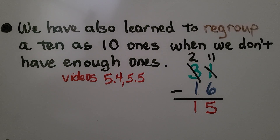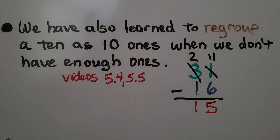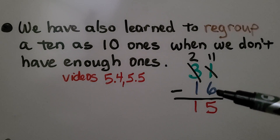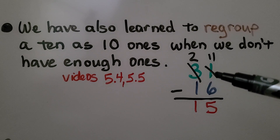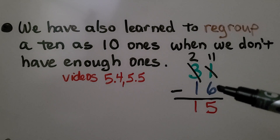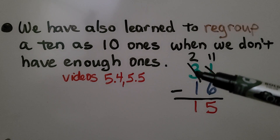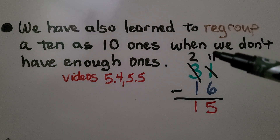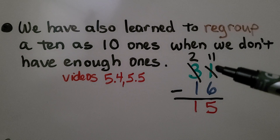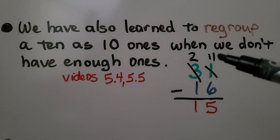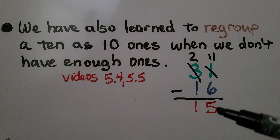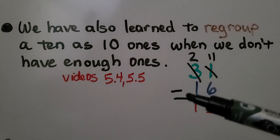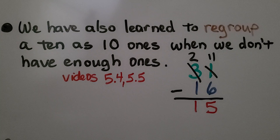We have also learned to regroup a 10 as 10 ones when we don't have enough ones. With 31 minus 16, we look at the 6 and ask ourselves, can we take 6 away from this 1? No, we can't. So we need to regroup a 10 from the tens place — the 3 becomes 2 tens — and we give that 1 ten to the ones place as 10 ones. Now instead of 1 one, we have 11 ones, and 11 minus 6 is 5. We do 2 minus 1 ten is 1 ten. We have 15.